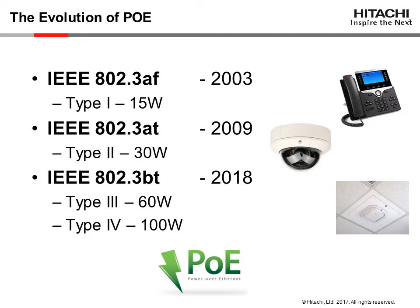In early 2018, 802.3BT will introduce two new power levels: Type 3 for 60 watts, and Type 4 for 100 watts. This will significantly increase the type of device that will utilize PoE. What started out as an option for powering phones will now power cameras, wireless access points, and even entire building lighting systems.